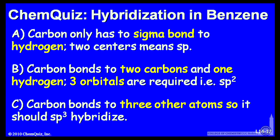Let's look at possible explanations for each of the answers. A, carbon has to only sigma bond to hydrogen, so it has two centers and will sp hybridize. B, carbon bonds to two carbons and one hydrogen. Three orbitals are required, or sp2 hybridization. Or C, carbon bonds to three other atoms, so it should sp3 hybridize. Think about those three options and make a selection.